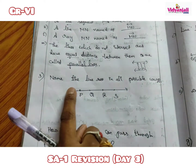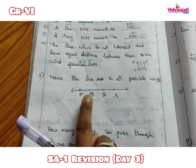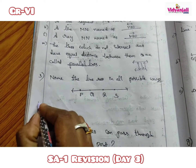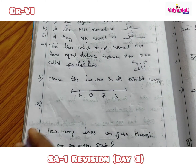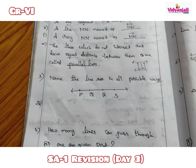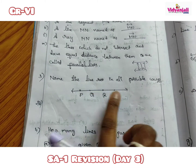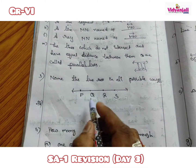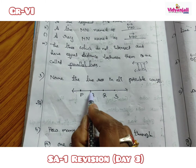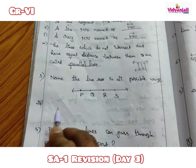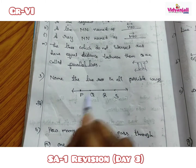Next: name the line in all possible ways. We have a line with 4 points — P, Q, R, S — on it. Just like people have nicknames, a line can be named using any two letters on it. Starting with P: line PQ, line PR, line PS. Starting with Q: line QP, line QR, line QS.